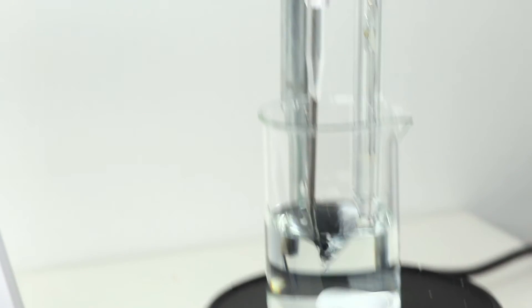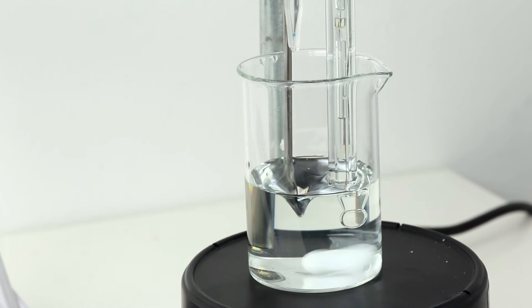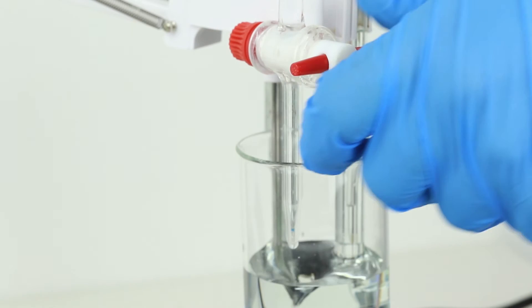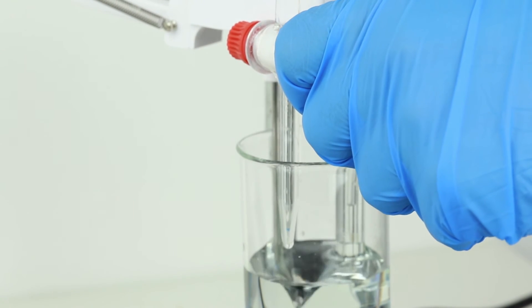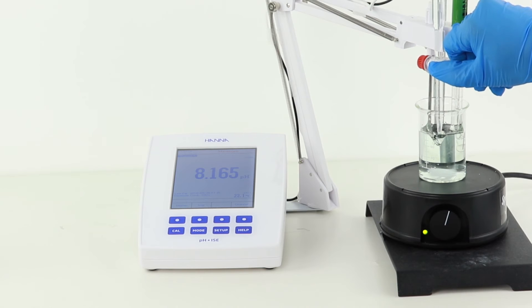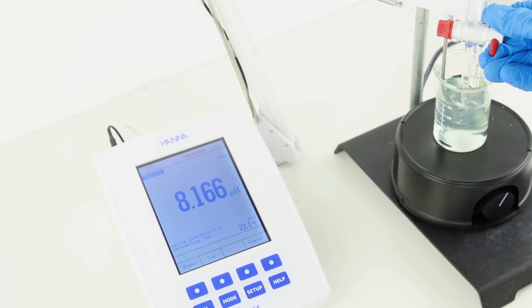Now, we can begin titrating with the sodium hydroxide titrant to the endpoint of pH 8.2. We do this by opening the stopcock to dispense the titrant. We'll add the titrant in larger quantities in the beginning and slow down as we approach the endpoint. The titration is complete when the pH meter displays pH 8.2.